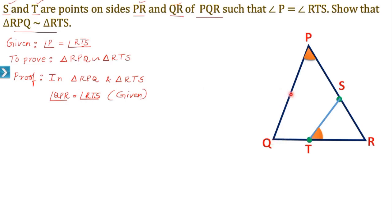Observe the figure: for triangle PQR and triangle RTS, angle R is common for both the triangles. Therefore, angle QRP is equal to angle SRT because it is the common angle.